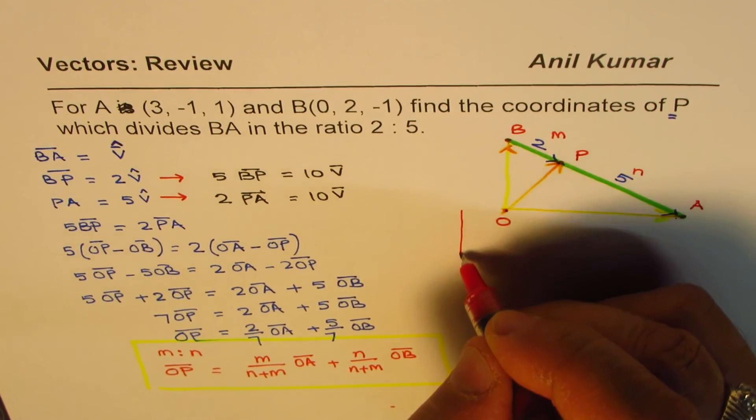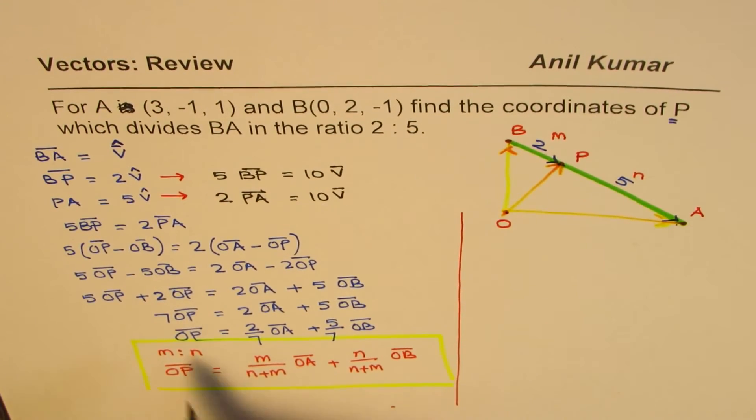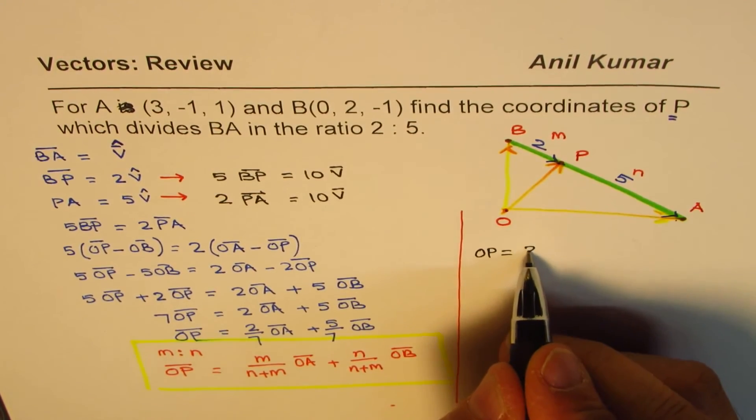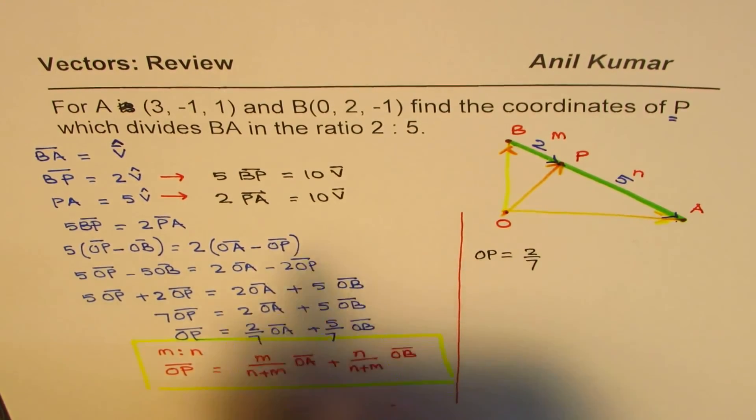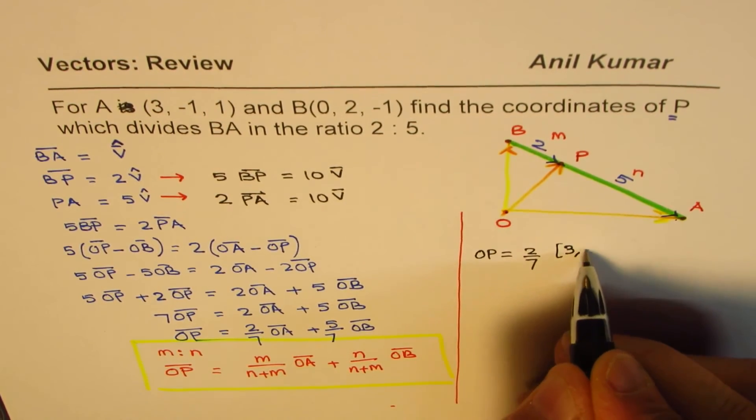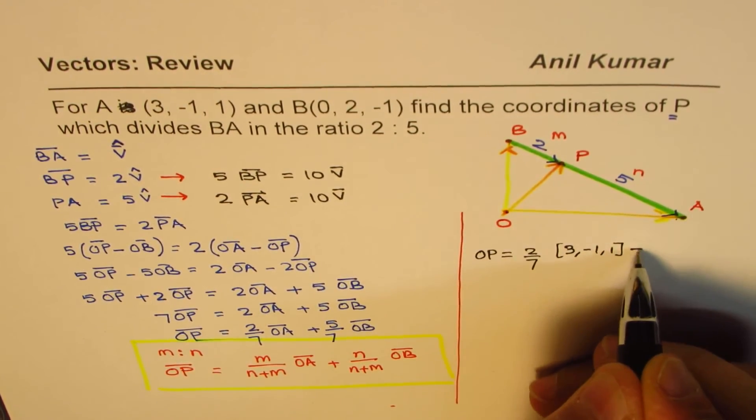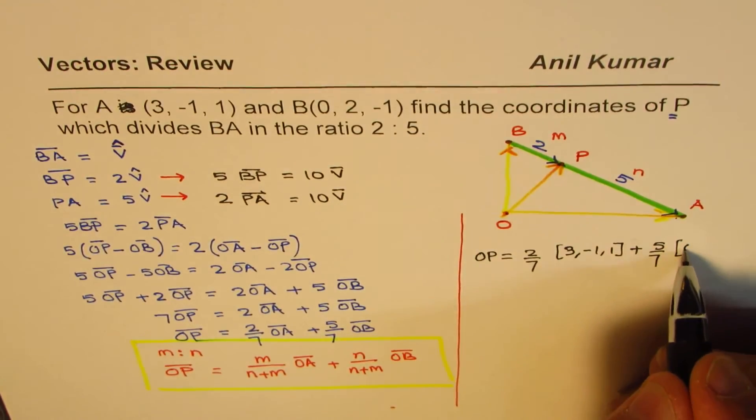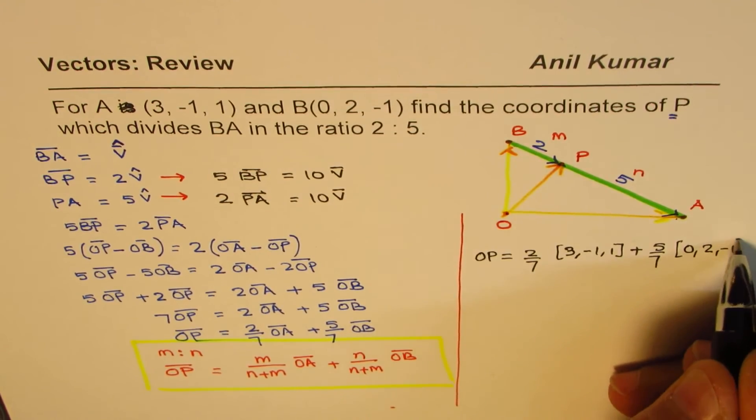Now, let us apply the formula and get the result. So OP equals 2 over 7, and what is OA? OA is (3,-1,1). So we can write this as (3,-1,1) plus 5 over 7, and OB is (0,2,-1).